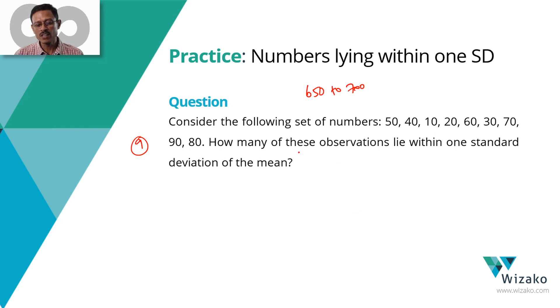What we need to find out is how many of these observations lie within one standard deviation of the mean. Let's say the mean is M, the standard deviation is D. So mean minus deviation to mean plus deviation, we need to find out how many terms are there.